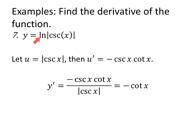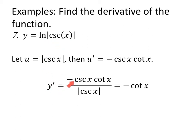For the natural log of the absolute value of cosecant of X, let the inside be the absolute value of cosecant of X. The derivative of cosecant of X is negative cosecant of X cotangent of X. So the derivative of the natural log of the absolute value of cosecant of X — derivative of the inside over the inside — gives us negative cotangent of X.